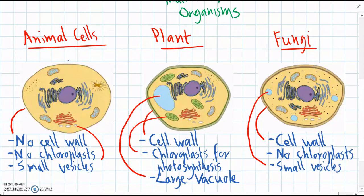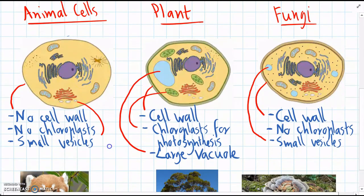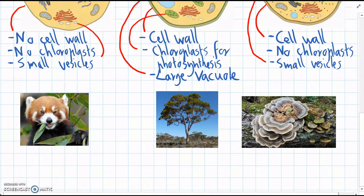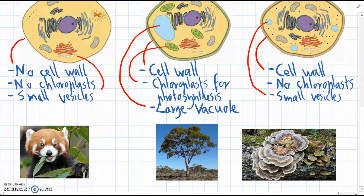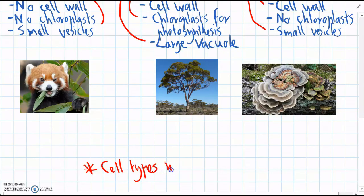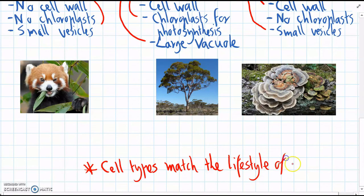So these are the main differences between all these cell types, and we need to be good at being a detective and identifying a different cell when we see it. The last thing to think about is figuring out how an organism's lifestyle relates to the organelles in the cell, because organisms have evolved a particular lifestyle based on the types of cells that they have — the cell types match the lifestyle of the organism.